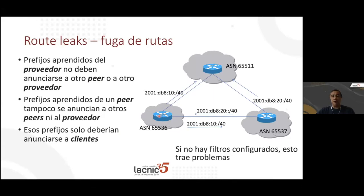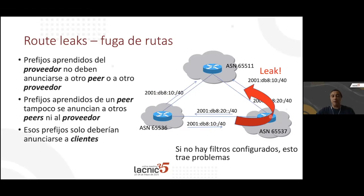In this example, assume autonomous system 65536 announces a network 2001:DB8:10:40 to its transit provider and to a peering. If this is a peering link, 65537 should not take it up to another autonomous system because peering is only between those two autonomous systems. If this AS has no filters configured, normally what it receives will be re-announced — and there we have a leak. So a route filtration failure results in traffic taking a route it should not take.